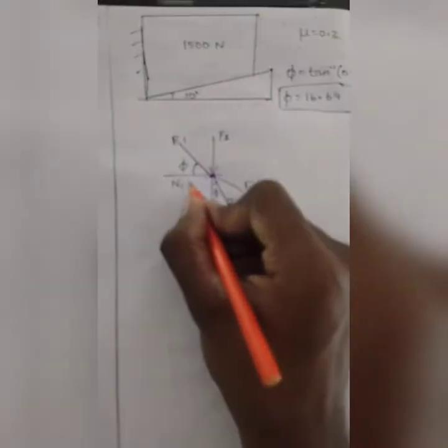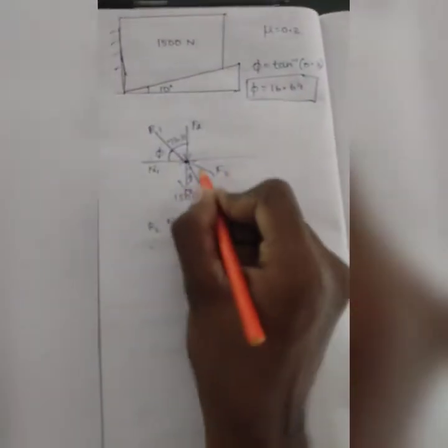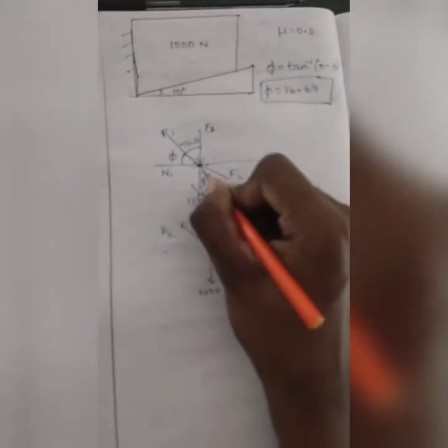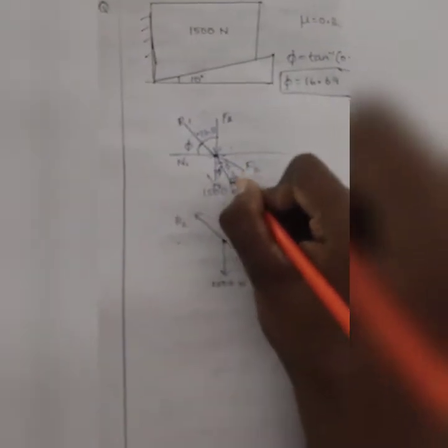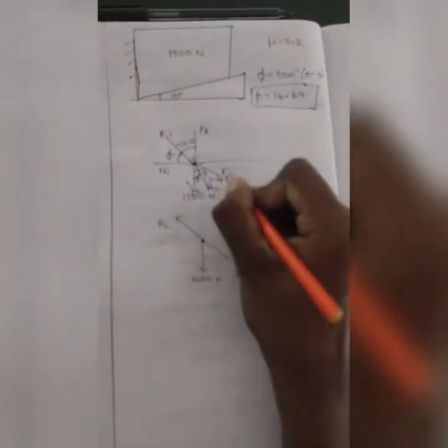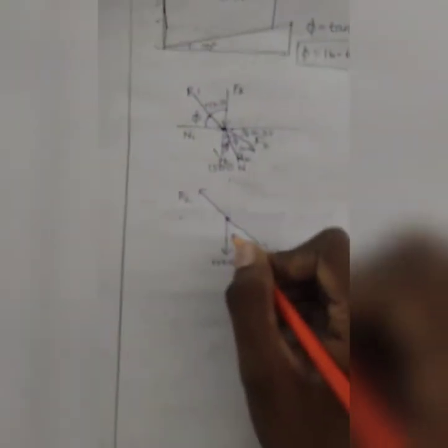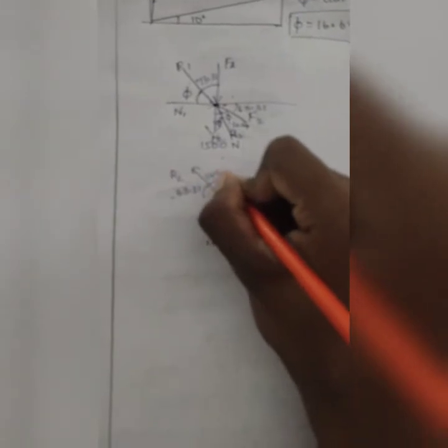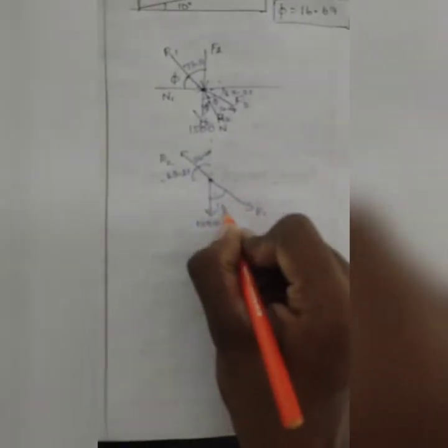This angle is 16.69. 90 minus 16.69 is 73.31. This angle is φ, this angle is 10 degrees. 10 plus 16.69 is 26.69, so 90 minus that is 63.31.